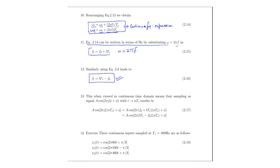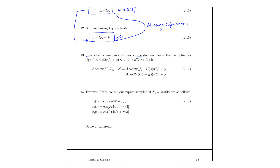These two are the corresponding continuous time frequency expressions for aliasing. This, viewed in the continuous time domain, means that sampling a signal with t = nTs results in this expression, since we are putting t as nTs. Once we get this expression, we substitute the value of f_l from equations 2.15 or 2.16 to get their corresponding aliases.